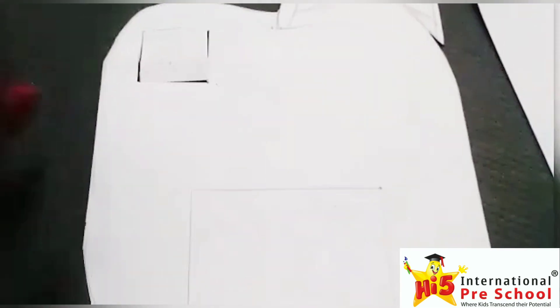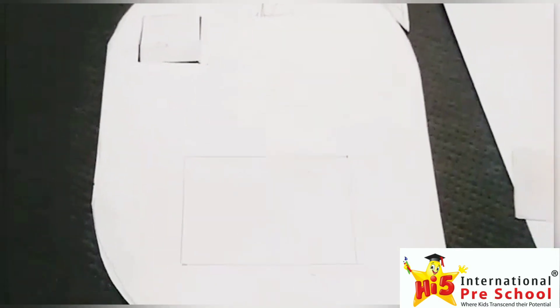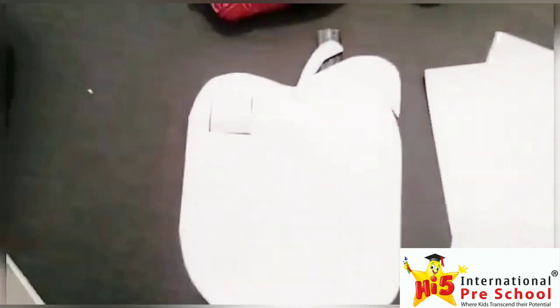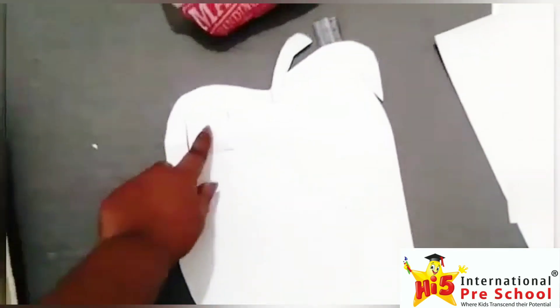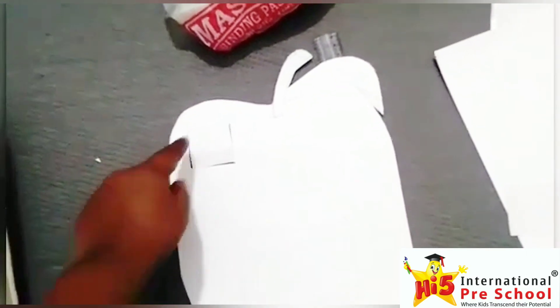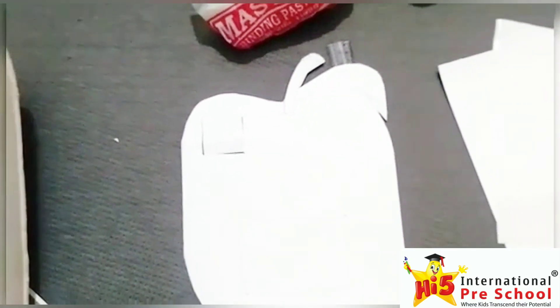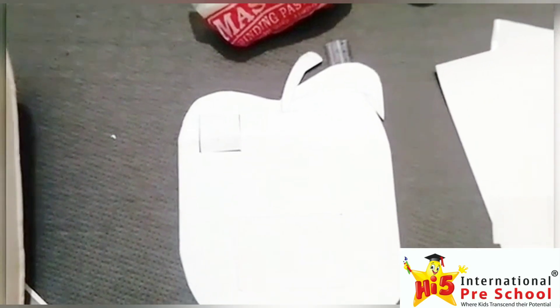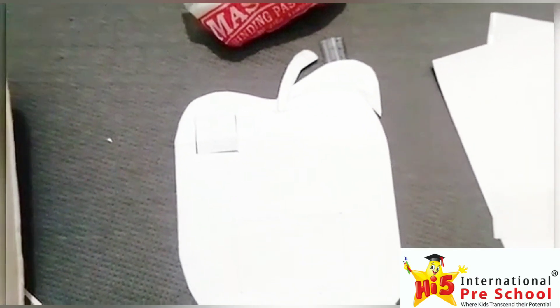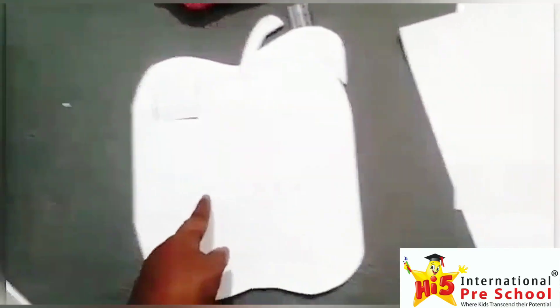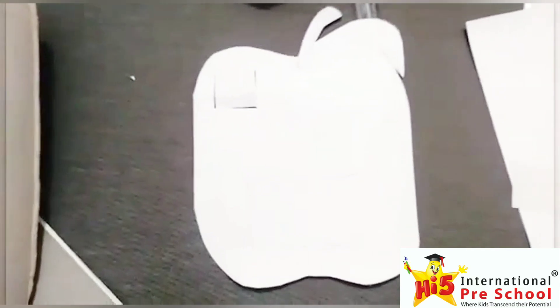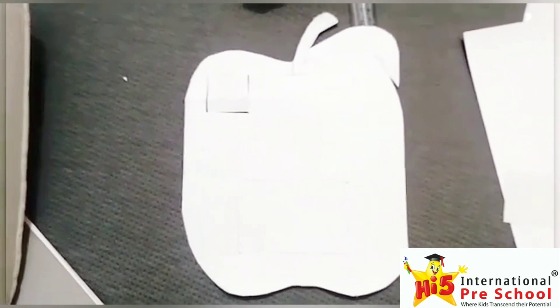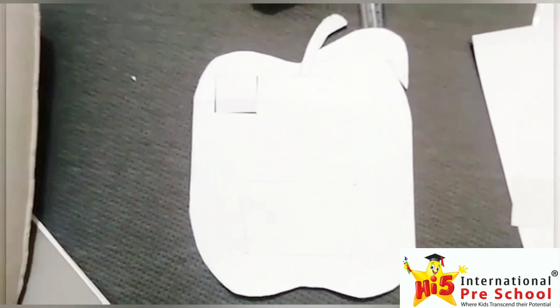Now, take the A4 sheet and draw a big apple shape over it and at the top of the apple, you have to draw a square of 4 cm and at the bottom, in the middle of the apple, you draw a rectangle of 7 cm and 10 cm width.